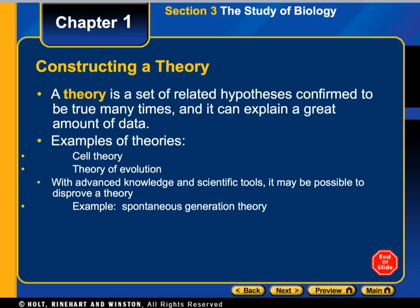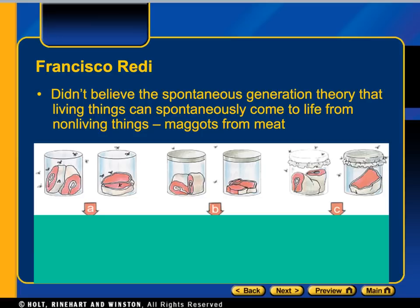One theory — called the spontaneous generation theory — was actually disproved. A man named Francisco Redi actually disproved it. There was a concept called spontaneous generation, and people believed that living things could spontaneously come to life from a non-living thing. For example, they believed that maggots were produced from meat. You can see how he set up his experiment.